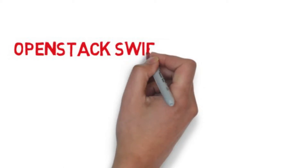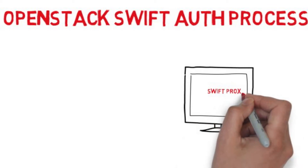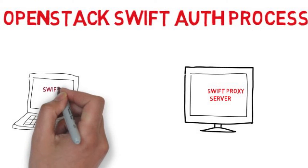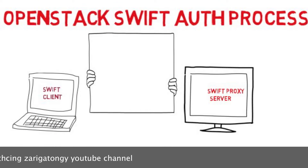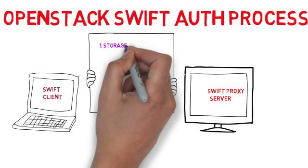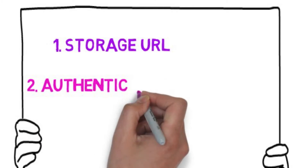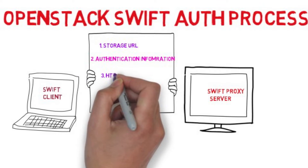Hello and welcome to OpenStack's Swift auth process. In this process, two components are involved: the Swift Proxy Server and the Swift Client, that is the REST Client. In order to send a request to the Swift Proxy Server, it should contain the following components: storage URL, authentication information, the HTTP methods, and other metadata information.